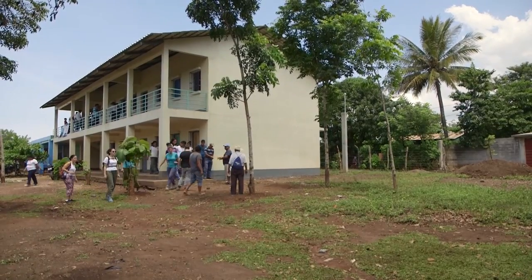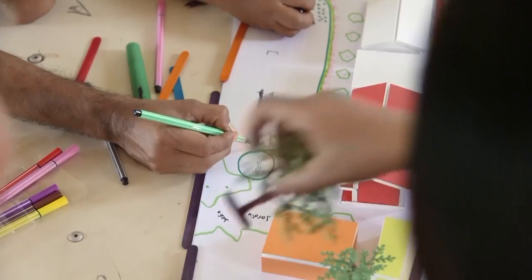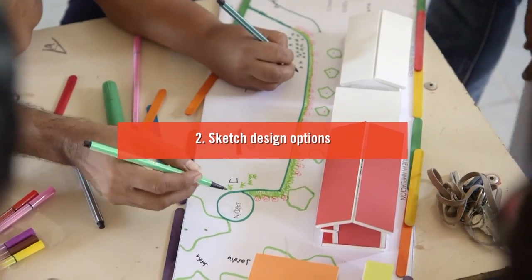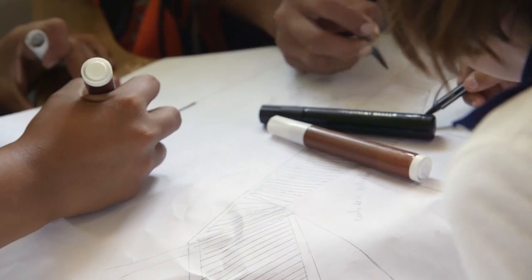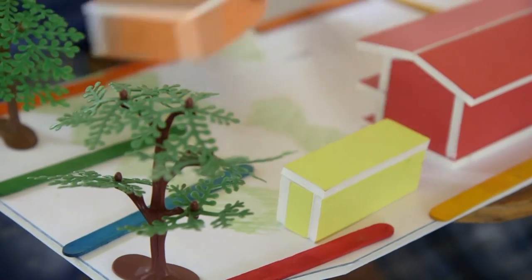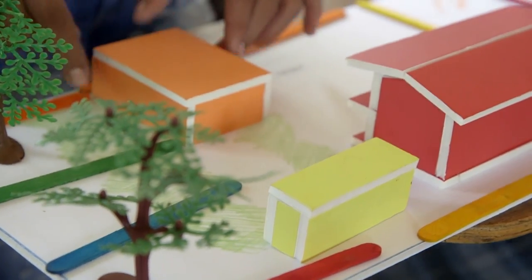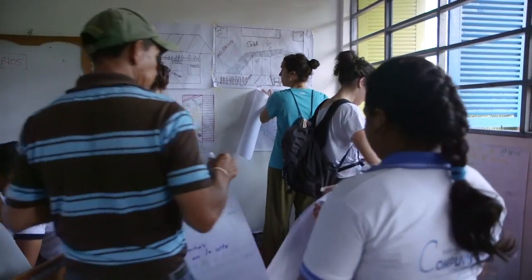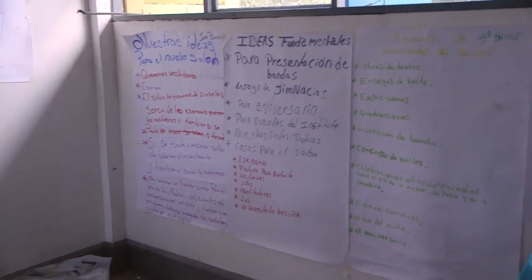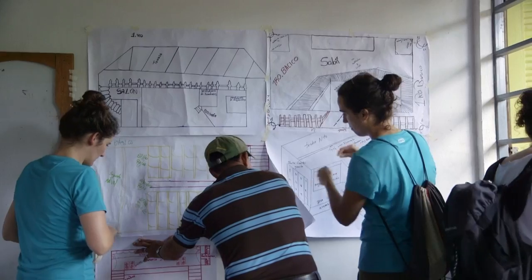After consulting with the community and understanding the site, the design team can move on to step two: sketch design options. The design options are models or drawings that include the ideas discussed. They show different ways the school building could be laid out and which materials might work. The community then looks at these models or drawings and discusses which option is best for them. The engineer makes sure all options will keep students and staff safe during disasters.